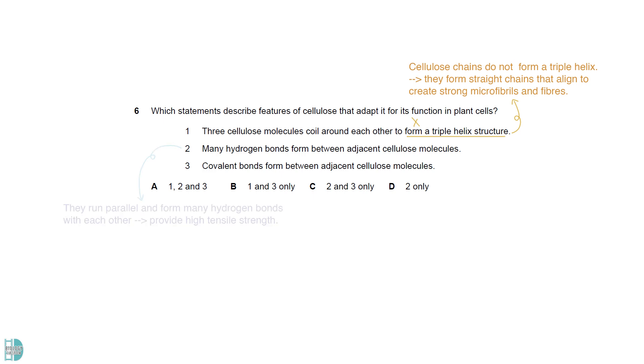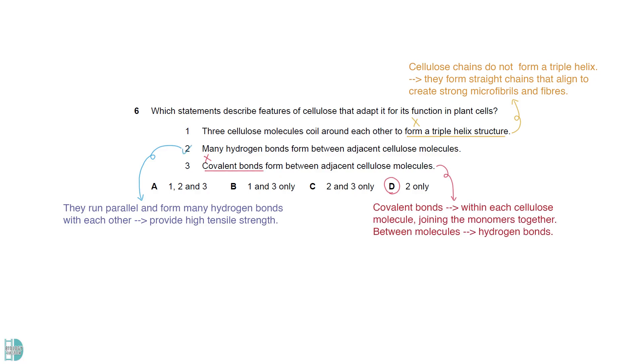2 is correct. Cellulose molecules run parallel and form many hydrogen bonds with each other, which collectively provide high tensile strength. 3 is wrong. Covalent bonds form within each cellulose molecule, joining the monomers together. Between molecules, it is hydrogen bonds.